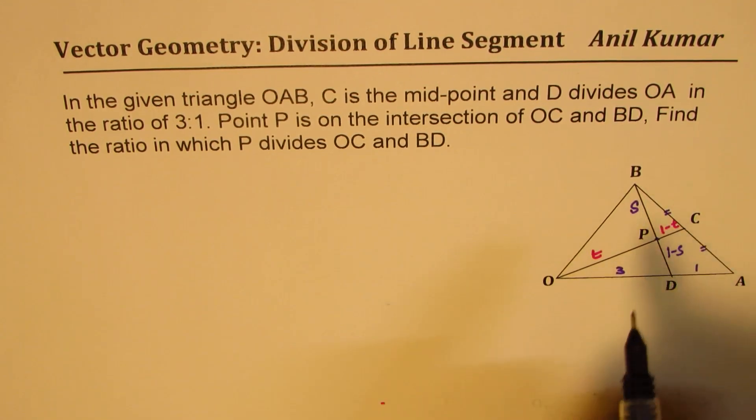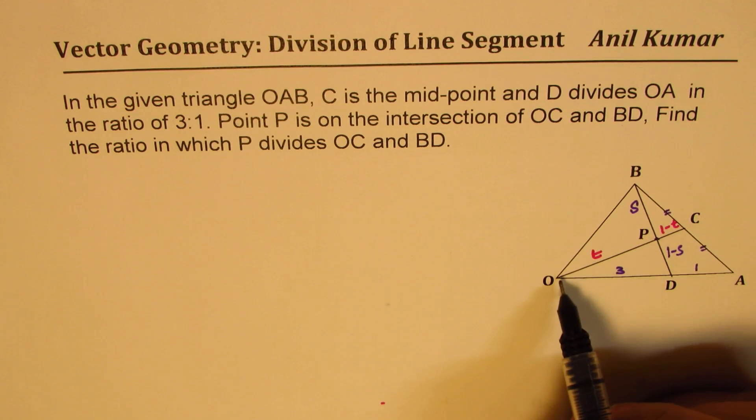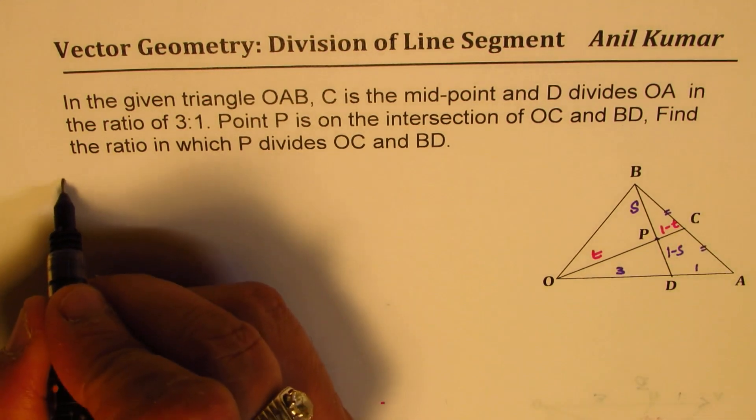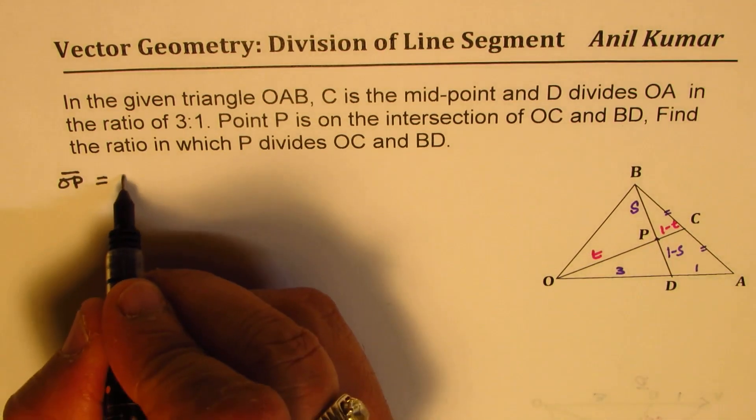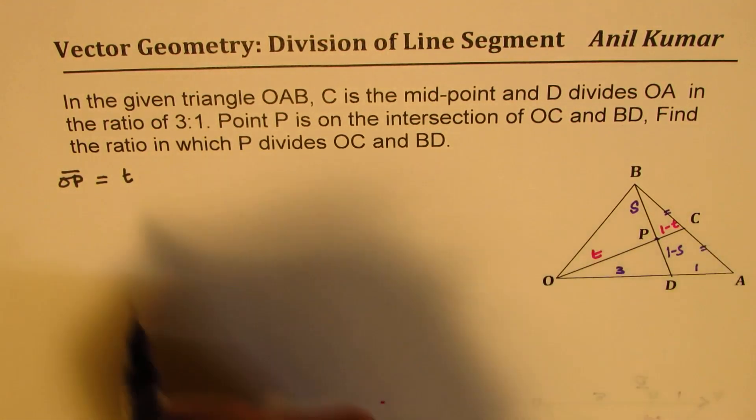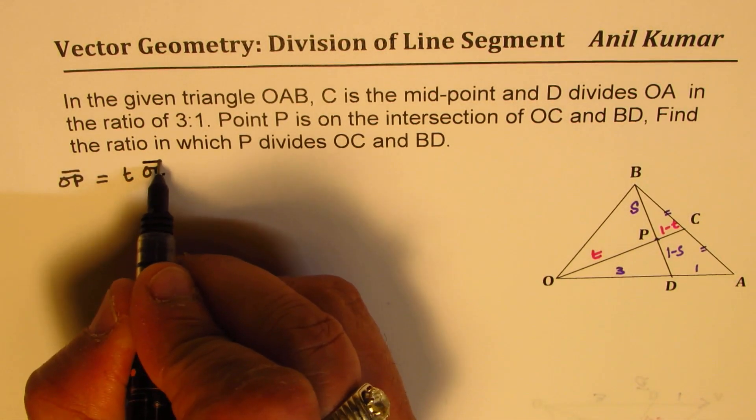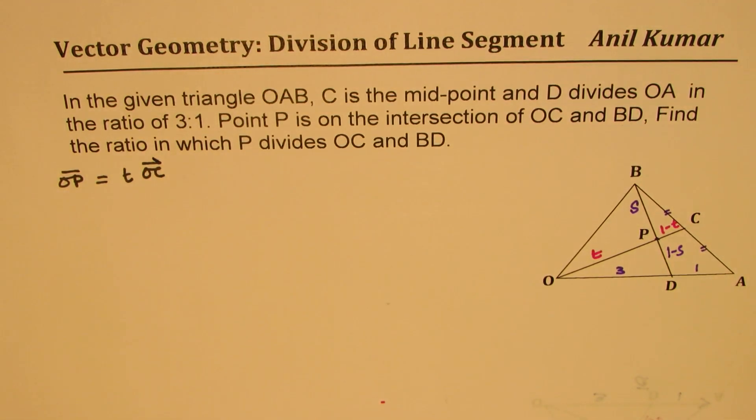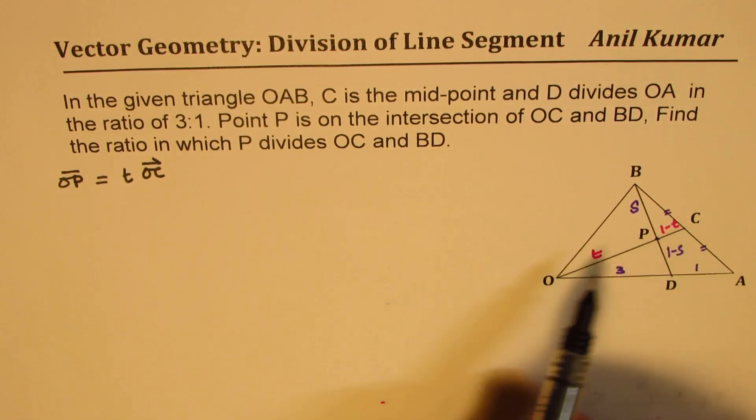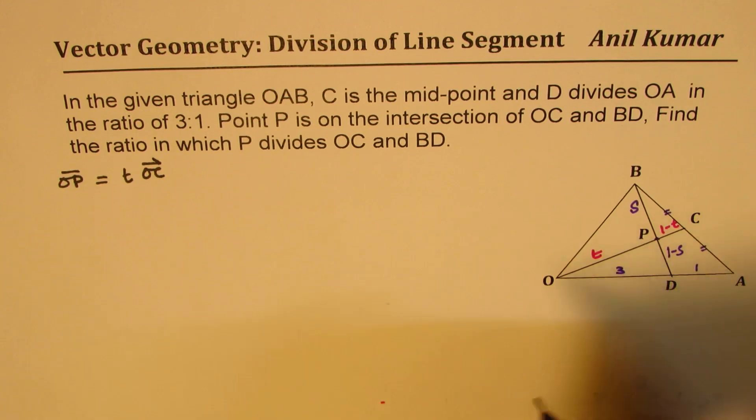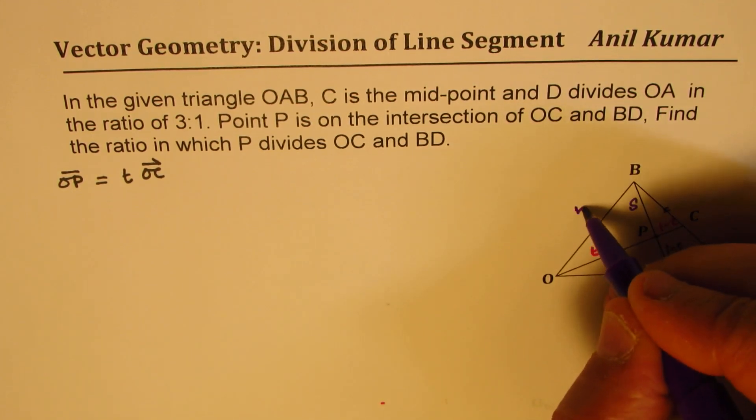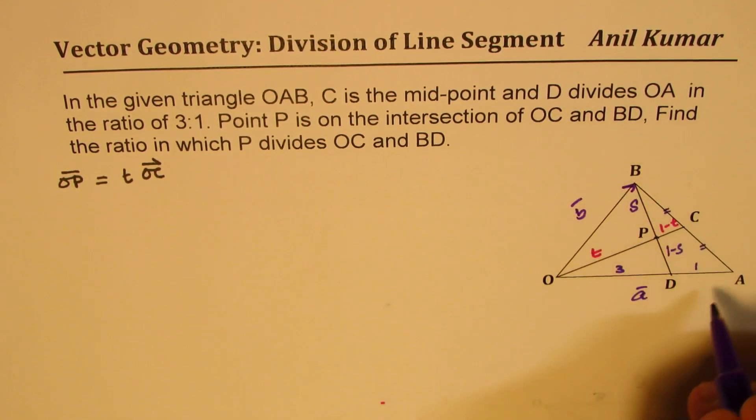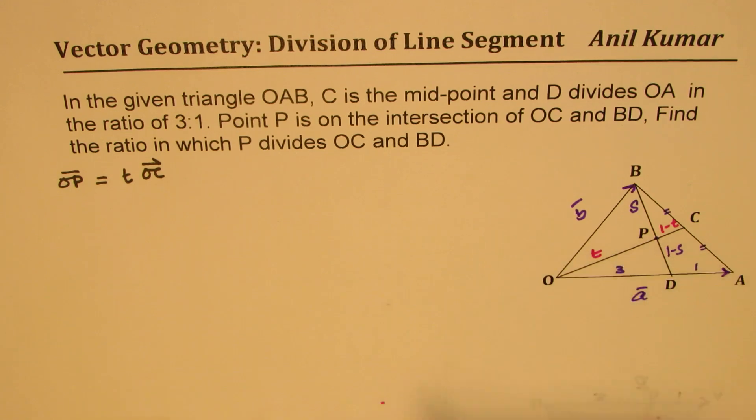So, let's first find what is OP from this direction. We know OP can be written as T, the scalar multiple of OC. Now, what is OC? To get the value of OC, let us write down vector OA as A vector, this as vector B. We write the answer in terms of A and B.